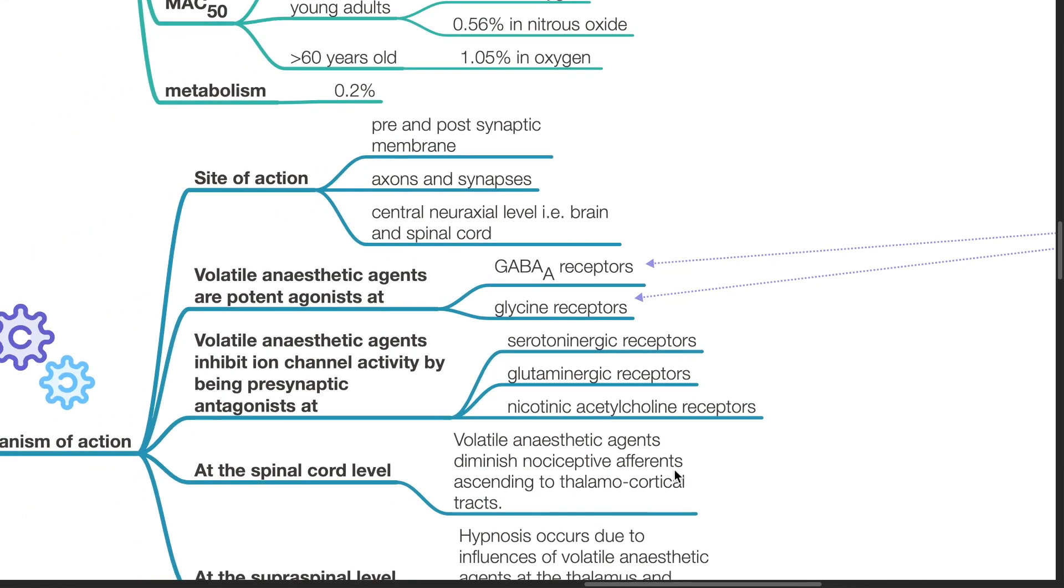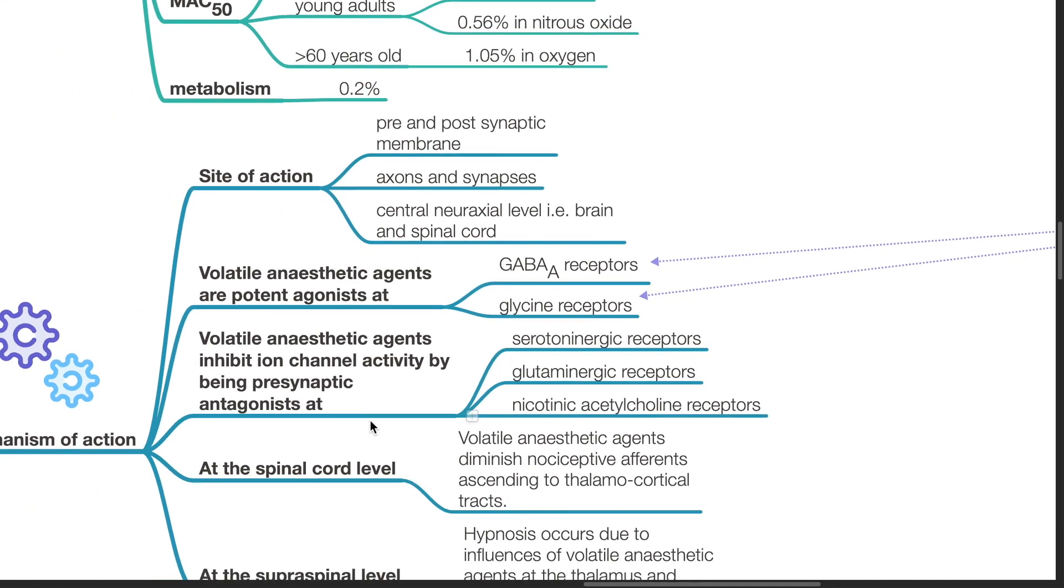Volatile anesthetic agents inhibit ion channel activity by being presynaptic antagonists at serotoninergic receptors, glutaminergic receptors, and nicotinic acetylcholine receptors.